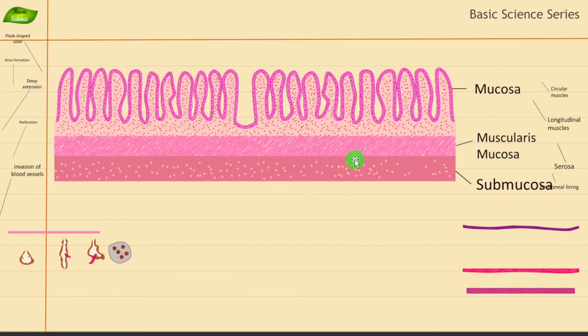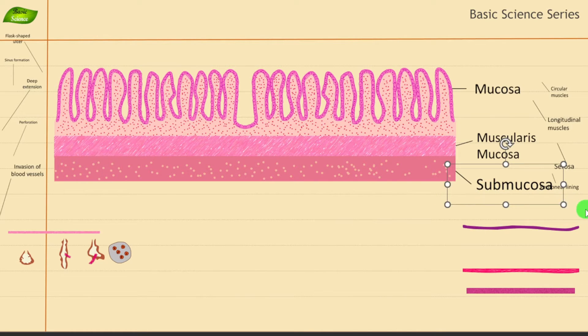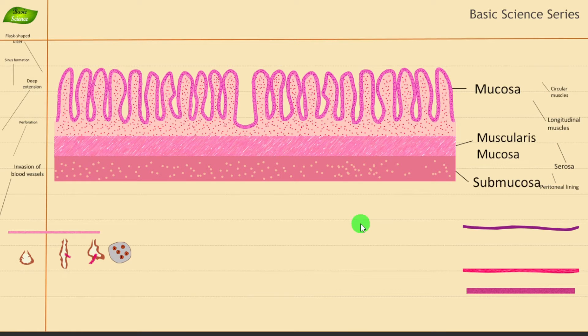Why am I explaining all these things? Currently I will be explaining how the pathogenesis of Entamoeba histolytica basically occurs, but you need to understand the structure of the intestine first. After the submucosa, let me adjust the size so it is proportional.